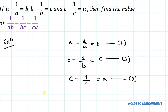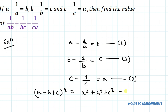In the first step, we know an algebraic identity: a plus b plus c whole square equals to a square plus b square plus c square plus 2 multiplied with ab plus bc plus ca. And we are asked to find 1 by ab plus 1 by bc plus 1 by ca.